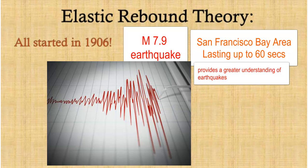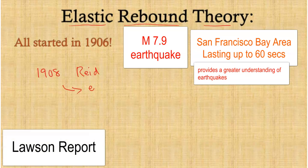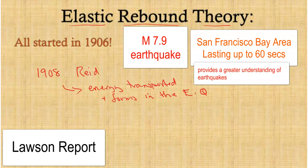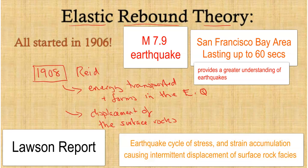Following the 1906 earthquake, scientists in California studied the data and information it provided, and elastic rebound theory was formed to explain how these events work. This happened in 1908, formulated by a gentleman called Reid, who explained how the energy moves, is transported, and forms in an earthquake — even before Hess's seafloor spreading and Matthews and Vine. Reid studied the displacement of surface rocks and concluded that there had to have been previous strain or stress built up in the rocks to cause this sudden shift or displacement, releasing the earthquake.